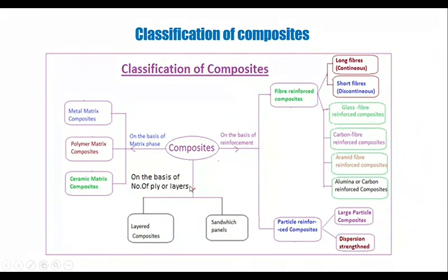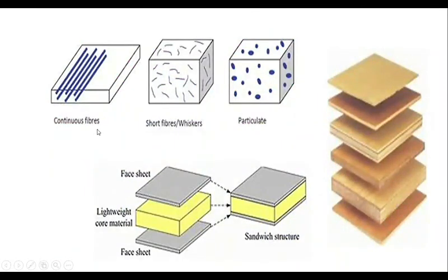In the third category, based on the number of layers or plies, the composites are classified into two categories: layered composites and sandwich panels. Layered composites consist of different layers of the materials, whereas the sandwich consists of mainly three layers. In the center, the core layer is there, and the top and bottom of that core layer, face sheets are attached to that core material. You can see the examples of these continuous fibers, short fibers or whiskers, particulates, layers, and the sandwich structure.